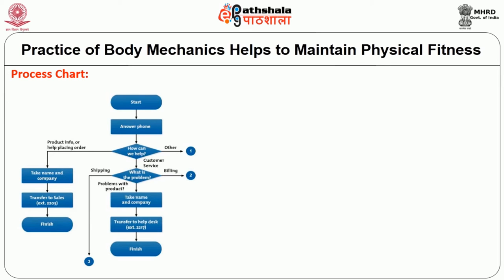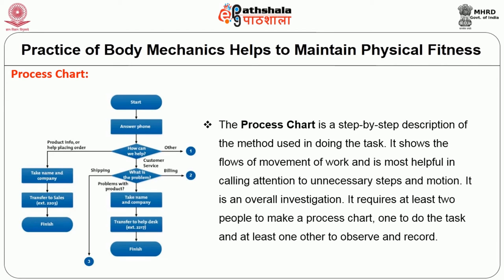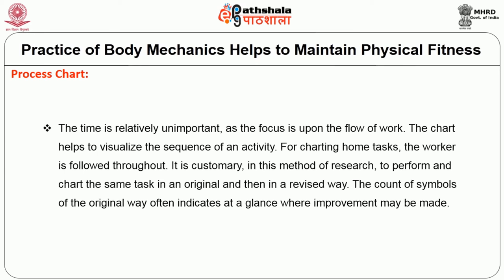The analysis mainly considers movement of limbs and aims at finding a simpler, more economical method of doing the job. The principles of motion economy act as a good guide in developing better methods. The process chart is a step-by-step description of the method used in doing a particular job. It shows the flow of movement of work and is most helpful in calling attention to unnecessary steps and motions. It requires at least two people: one will do the task and the other will observe and record. The focus is on the flow of work, and the chart helps visualize the sequence of an activity.